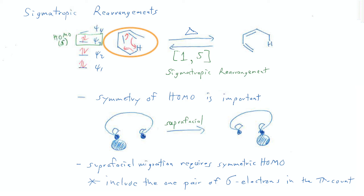Here I've got a conjugated diene, and it shows that familiar kind of alternating pattern of double bond, single bond, double bond. But if you imagine that this carbon-hydrogen bond that I have drawn out — if you imagine that that were a double bond — then it would extend the chain of conjugation. And that means that that C-H single bond could be involved in a sigmatropic rearrangement.